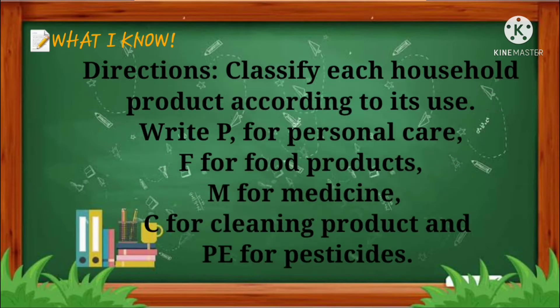What I Know. Directions: Classify each household product according to its use. Write P for personal care, F for food product, M for medicine, C for cleaning product, and PE for pesticides.